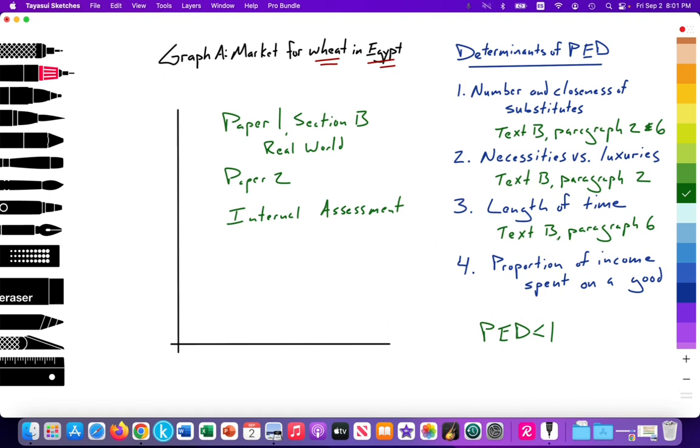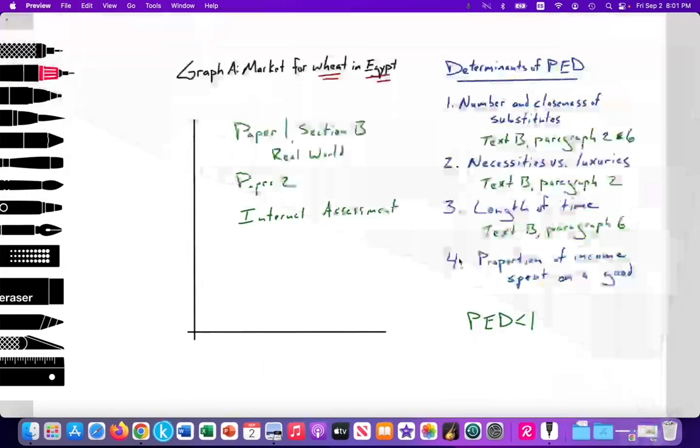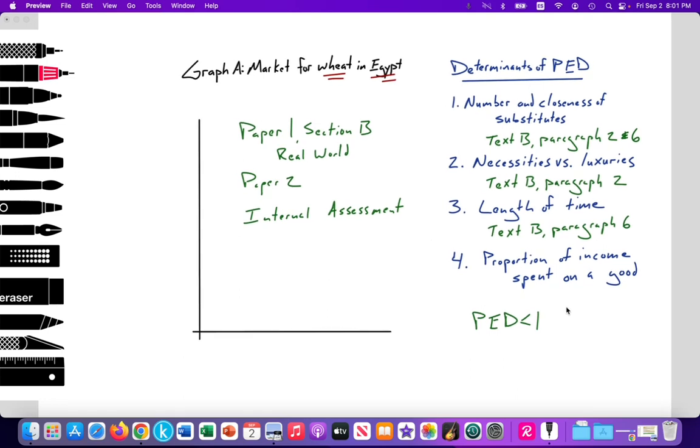Length of time. Text B, paragraph 6. That paragraph mentioned that there is water scarcity in the region. And so it would take time to perhaps find ways to irrigate rivers to produce more water or desalinize salt water to produce more water. That takes time. And just to grow food takes time. Time to plant it. Time to harvest it. So that's a long-run solution. But in the short run, it's going to be inelastic.